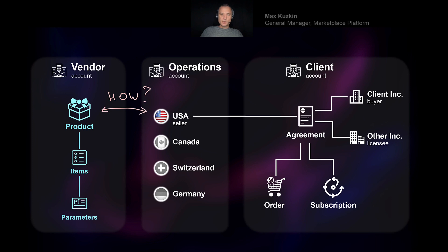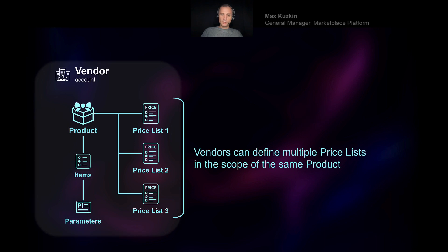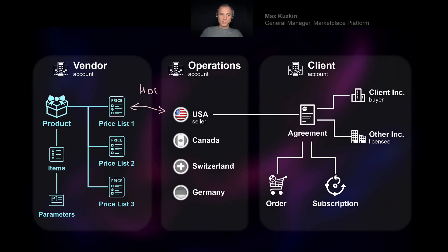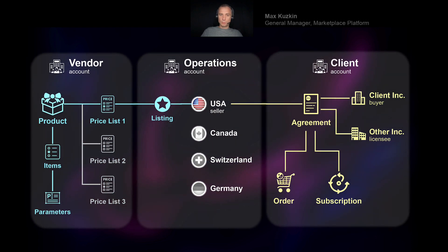Those products are then linked to the SoftwareOne world to be made available to clients. Vendors define price lists for different regions — and this is one of the values we provide: uniform access to pricing information across regions. Those price lists are linked to specific sellers, and this is maintained through another business object called a listing. A listing is the object that our staff establishes after reviewing a product — it links the product and price list with the seller. This makes the product available to our clients.